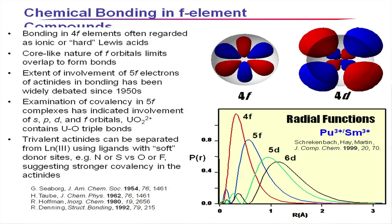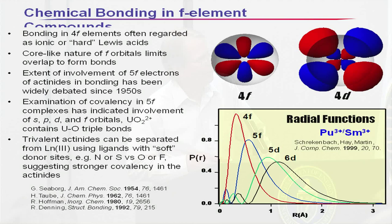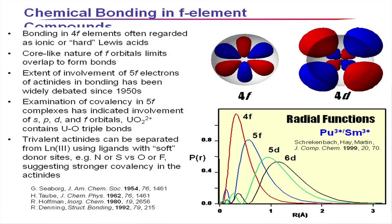The chemical bonding in F-element compounds: the actinides have more extended orbitals compared to the lanthanides. The 5F orbitals are a little further from the nucleus and are a little more available for bonding, same with the outer D and S orbitals. That gives the actinides a little more covalent character — they look a little more like transition elements early in the series. This larger covalence is the basis for the ability of soft donor atoms to separate trivalent actinides and lanthanides in processes like TALSPEAK and SANEX.